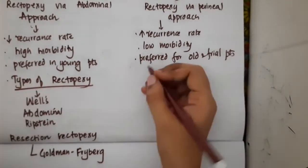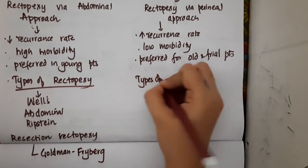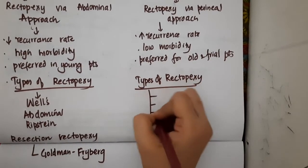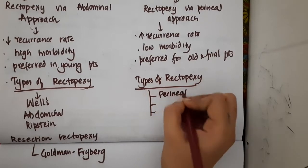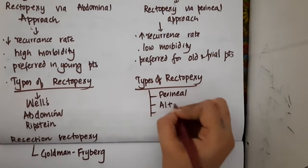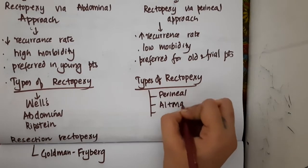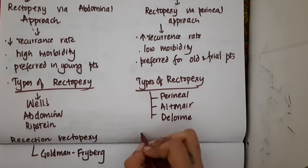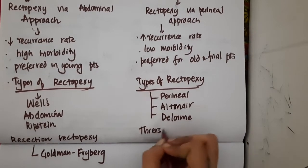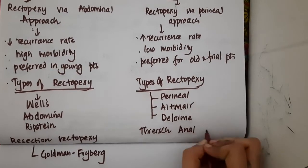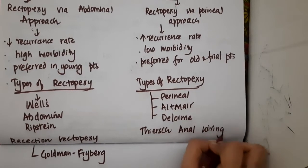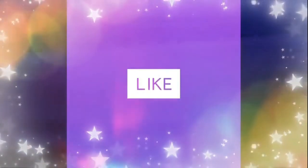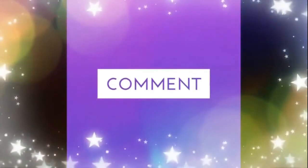If you see rectopexy via perineal approach, the types include three: Perineal Rectopexy, Altemeier Rectopexy, and Delorme Rectopexy. We also have one more type of rectopexy via perineal approach which is Thiersch anal wiring. These are the important points about rectal prolapse. Thank you for watching.